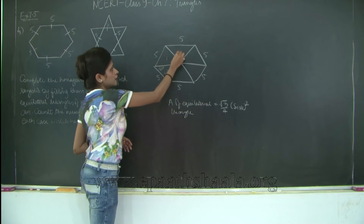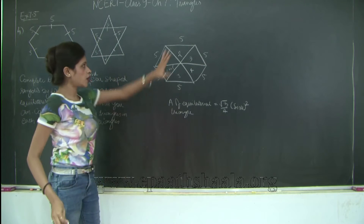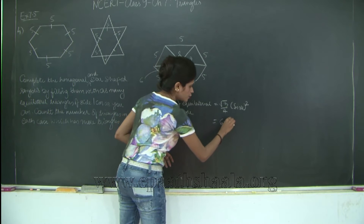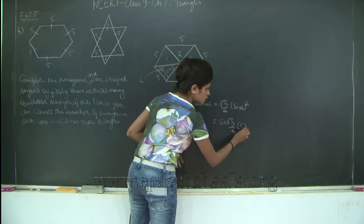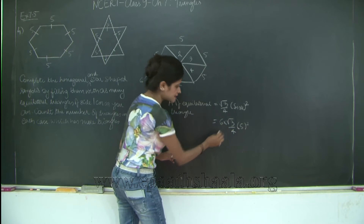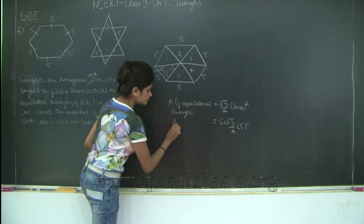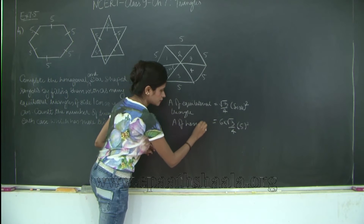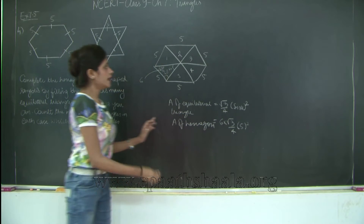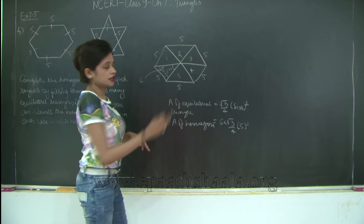How many triangles do we have in all? We have 1, 2, 3, 4, 5, and this is the 6th triangle. So what is the area of the entire hexagon? It is 6 × (√3 / 4) × 5². We use 5² because 5 is the side, and 6 because we have 6 equilateral triangles. This is the formula for area of an equilateral triangle, and this gives us the area of the entire hexagon. Now we need to find out how many equilateral triangles of 1 centimeter can be drawn in this hexagon.